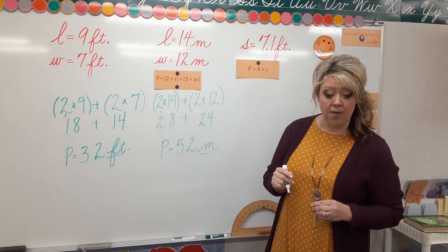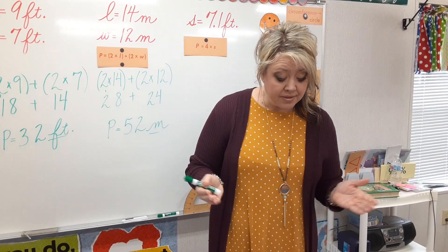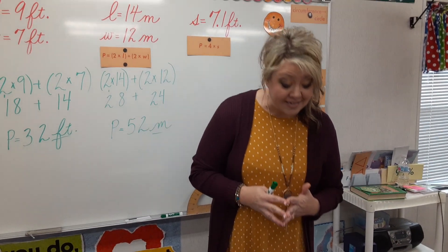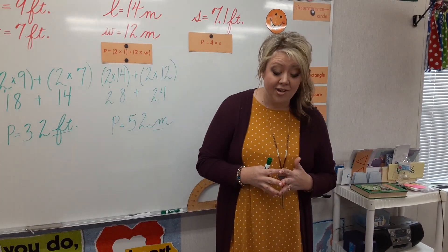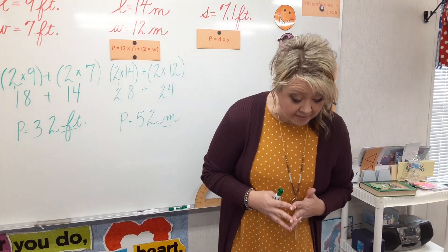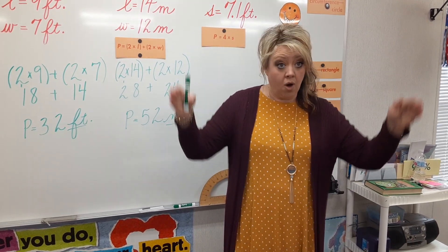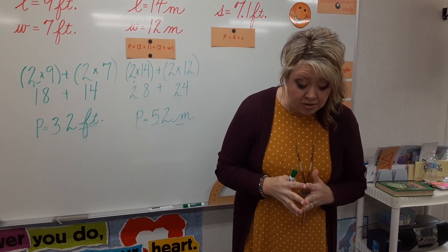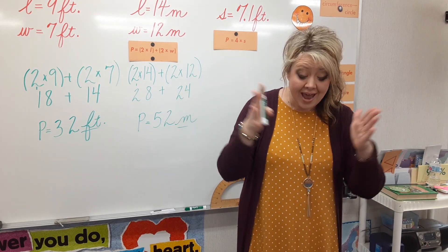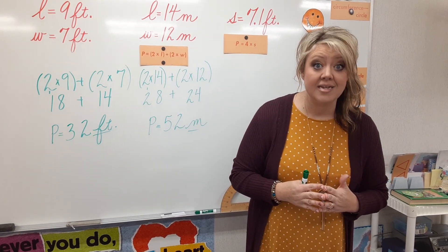I'll be checking in your book to see if you have that. You have a story problem on 1A, page 251: Mr. Hill plans to put a rectangular fence around his yard. His yard is 96 yards long and 49 yards wide. How many yards of fencing does he need? We know it's a rectangular fence, so obviously it's perimeter. P equals 2 times L plus 2 times W — multiply 2 times 96, and 2 times 49, then add those together. The answer is 290 yards.